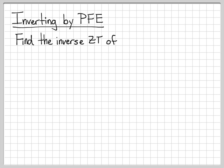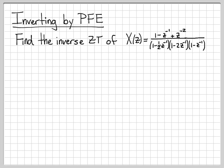Here is a z transform X(z), equal to 1 minus z⁻¹ plus z⁻² divided by the product of three terms: (1 minus one-half z⁻¹)(1 minus 2z⁻¹)(1 minus z⁻¹). We're told the region of convergence is the set of points in the complex plane whose magnitude is bigger than 1 but less than 2. What we're asked to do is find the inverse of this z transform, x(k).